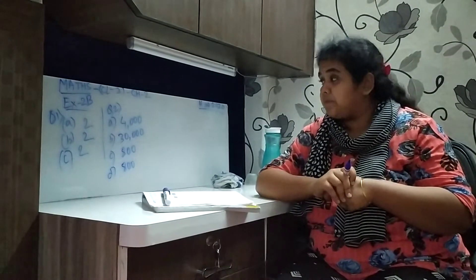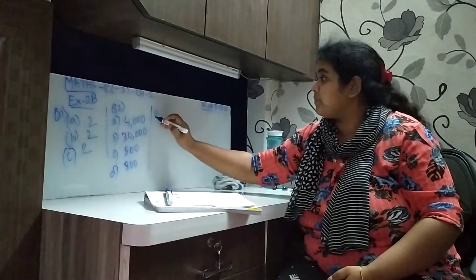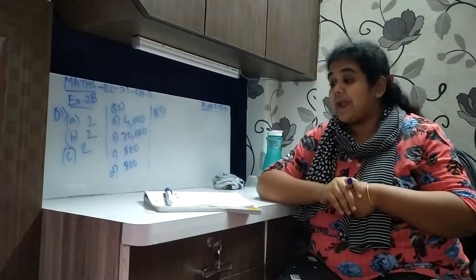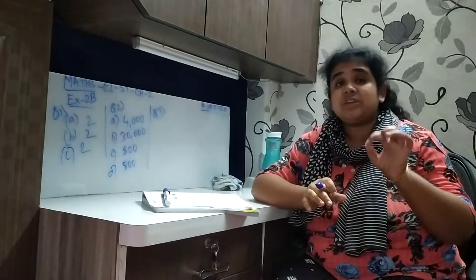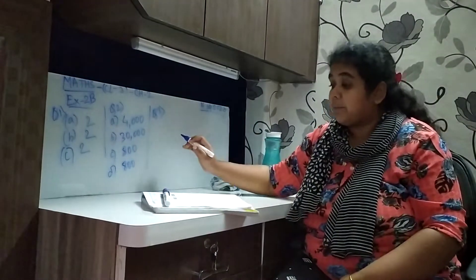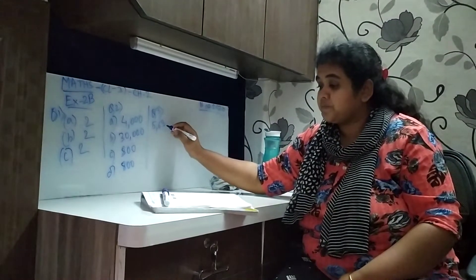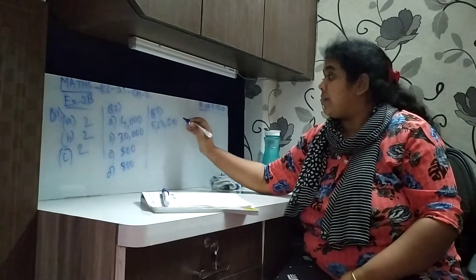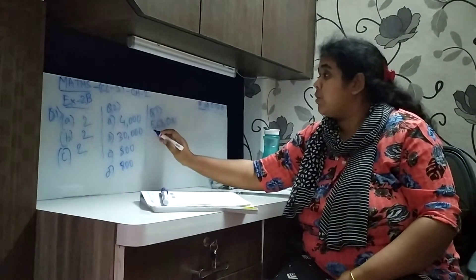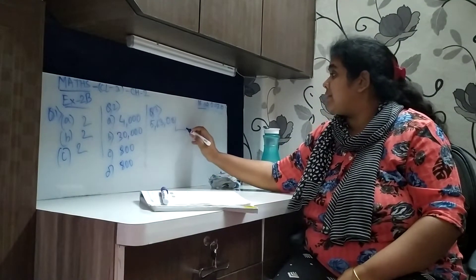Question number 3. Write the face value of each digit of the number. The number is 563,081. So the face value of 1 is 1.